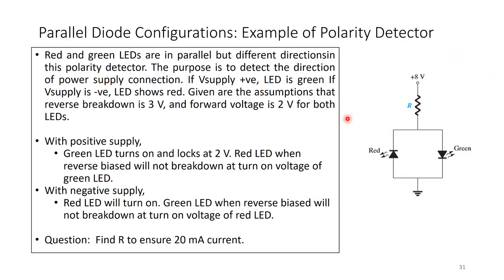So: positive supply turns on the green LED, negative supply turns on the red LED. Given that both LEDs have a reverse breakdown voltage of 3 volts and a forward voltage of 2 volts.